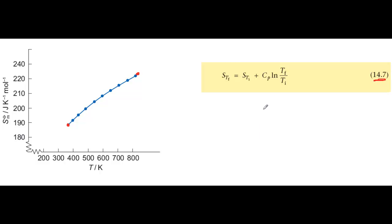If the substance is heated from initial temperature Ti to final temperature Tf, then the molar entropy increases from its initial value Sti to its final value Stf by the factor Cp times the natural logarithm of T final over T initial, where Cp is the molar heat capacity at constant pressure.